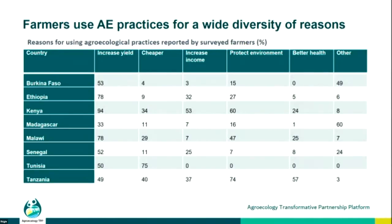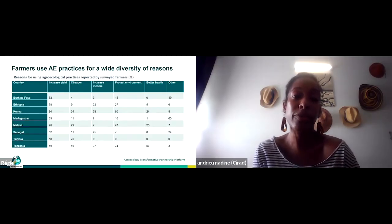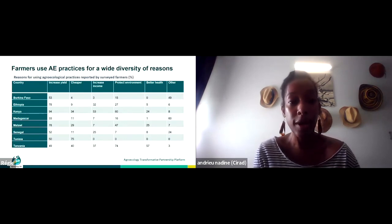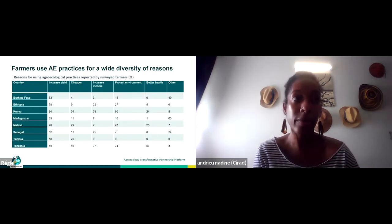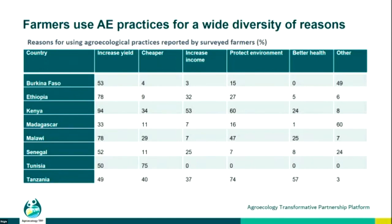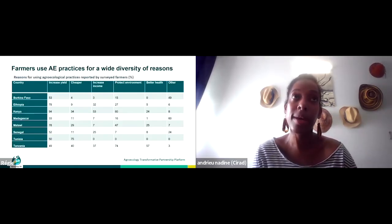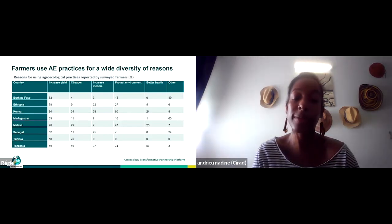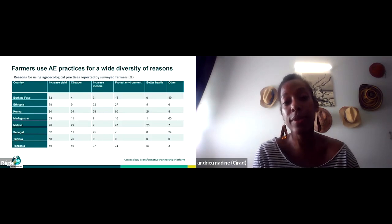Farmers use agroecological practices for a wide diversity of reasons, varying from site to site. Increased yield is one important reason, related to the principles of input reduction and soil health observed across sites. However, environmental and social reasons are also frequently mentioned by farmers as motivations for implementing these practices, and it is important for assessments of agroecological practices to include these dimensions.